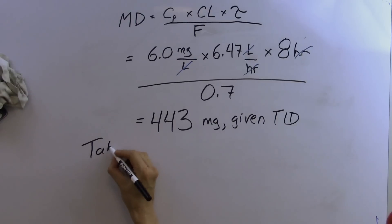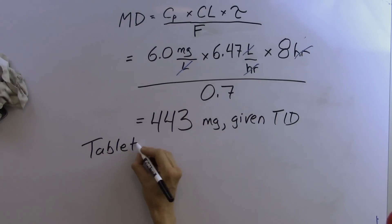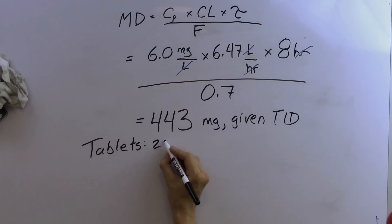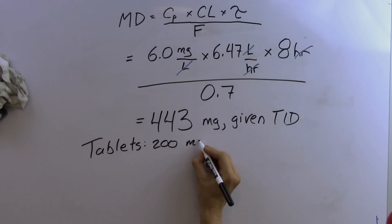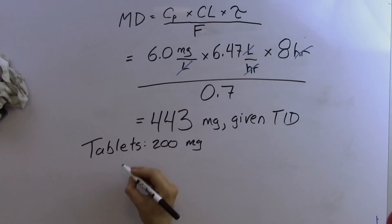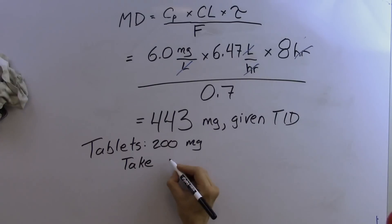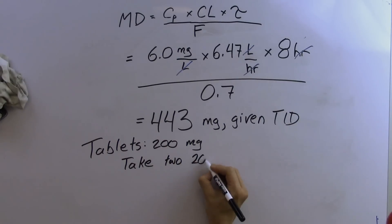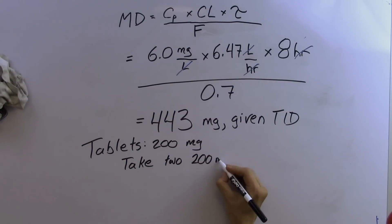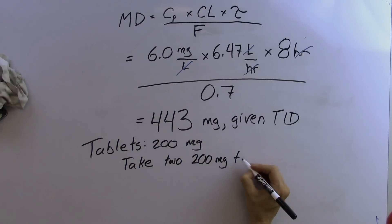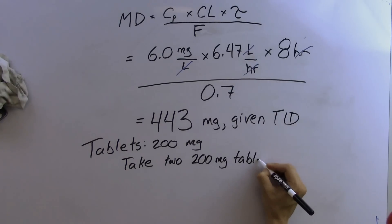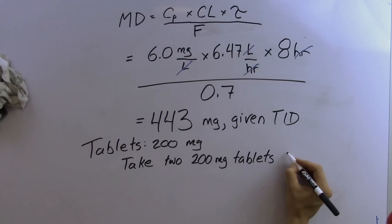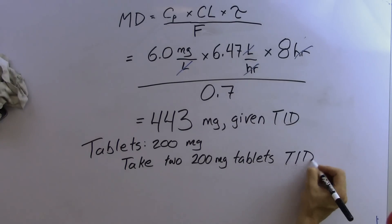Tablets of carbamazepine come in 200 milligram doses, so taking two 200 milligram tablets three times a day would give approximately the target plasma concentration in this man.